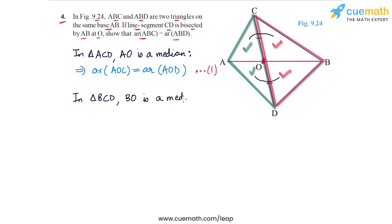BO is a median. It will divide triangle BCD into two parts of equal areas. So we have area of BOC...